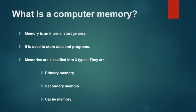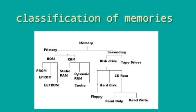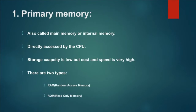Computer memories are classified into three categories: primary memory, secondary memory, and cache memory. Primary memory is also called main memory or internal memory. Primary memory is directly accessed by the CPU. Any data operated by the CPU is stored in primary memory. The storage capacity of primary memory is low, but cost and speed are very high when compared to other memory.